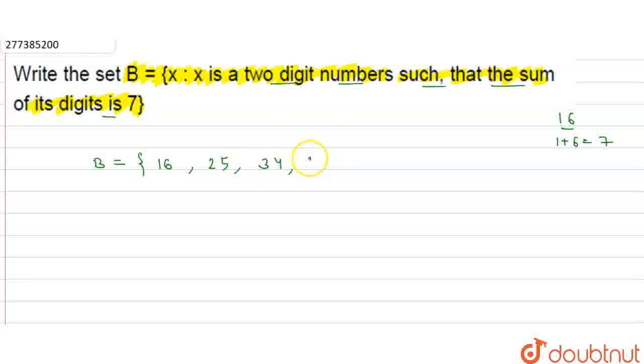Next, 4 plus 3 equals 7, giving us 43. Then 5 plus 2 equals 7, so 52. Next, 6 plus 1 equals 7, so 61.